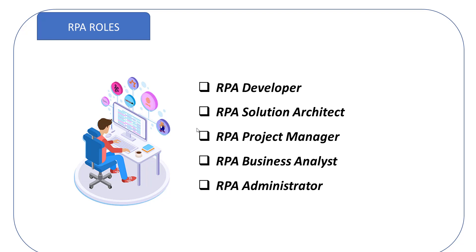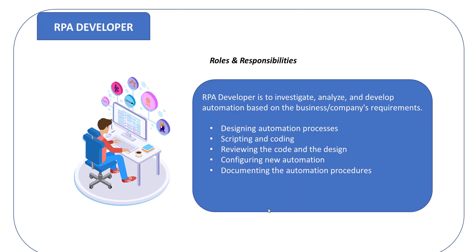The five primary RPA roles are: first, RPA Developer; second, RPA Solution Architect; third, RPA Project Manager; fourth, RPA Business Analyst; and fifth, RPA Administrator. Along with these, there are many other RPA roles. Let me explain the roles of the RPA developer one by one in detail.